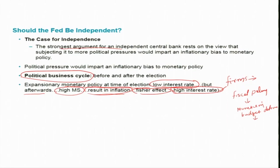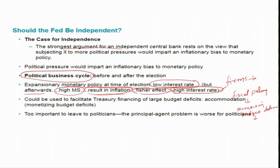Those who argue for independence state that reducing the independence of the central bank creates a high probability for a political business cycle — treasury financing through large budget deficits and accommodative monetary policy. Therefore, it is better to give more independence to the central bank to avoid this cycle. Another related argument is that monetary policy is too important to leave to politicians, as the principal-agent problem is worse for politicians.